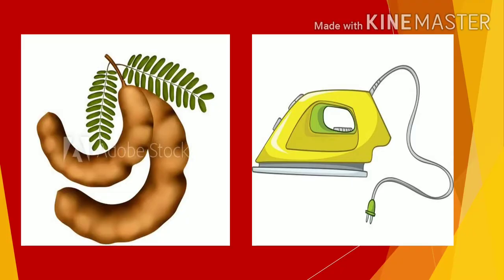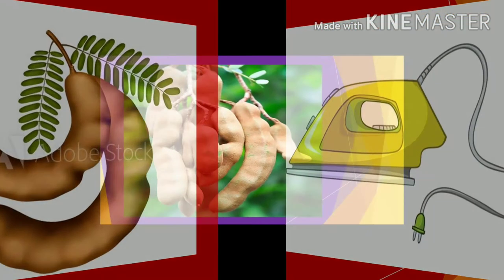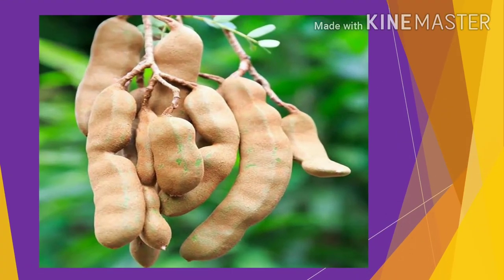Now we will learn about two pictures where the words start with letter E. Look at the first picture. Do you know what this is? Imli. E is for Imli. Imli means tamarind.